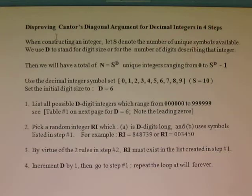So let's start. When constructing an integer, let s denote the number of unique symbols available. We use d to stand for digit size or for the number of digits describing that integer.